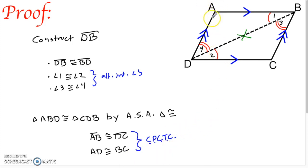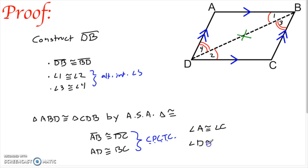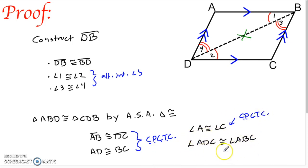Angle A and angle C are also congruent — corresponding parts of the congruent triangles — giving us one pair of opposite angles. I still need angle ADC congruent to angle ABC. That's not directly from CPCTC for the larger angles, but angles one and two are congruent, and angles three and four are congruent, so one plus three equals two plus four. A little additional argument gets us that the larger angles ADC and ABC are congruent.